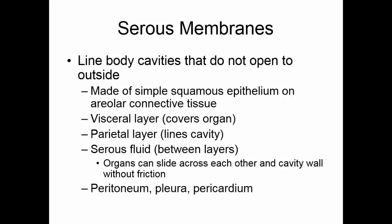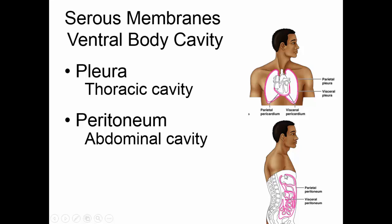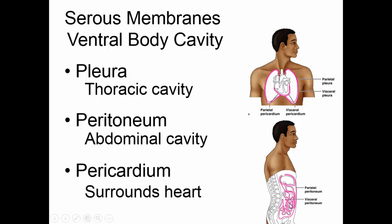There are three serous membranes: the peritoneum, the pleura, and the pericardium. The pleura lines the thoracic or chest cavity — its parietal layer is against the chest wall and its visceral layer covers the lungs. The peritoneum lines the abdominal cavity — its parietal layer is against the abdominal wall and its visceral layer wraps around all the digestive organs. The pericardium covers the heart, which has its own separate sac with both a visceral and parietal layer and serous fluid between them.